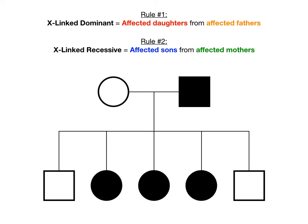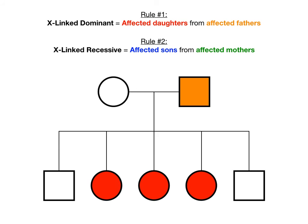Let's go back to practice question one. The pedigree showed an affected father — the colored-in square — who has three daughters that are all colored in, meaning all daughters are affected, and two sons that are not colored in, so they're not affected. The takeaway is that you've got an affected father and a non-affected mother creating three affected daughters but no affected sons. Because of this, this is rule number one — this is X-linked dominant.